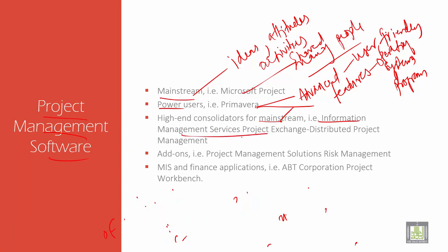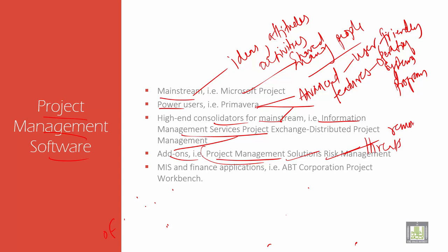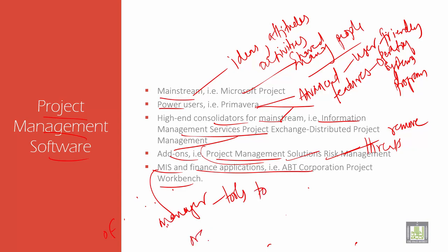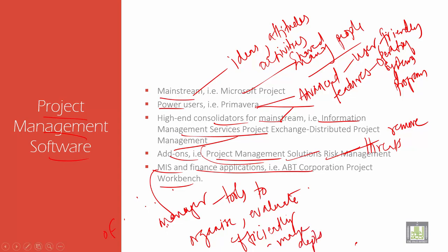Add-ons are tools which integrate into your browser — similar to regular apps or programs that run when the browser runs. They create solutions for risk management, removing threats. MIS, the Management Information System, is a computer-based system that provides managers with tools to organize, evaluate, and efficiently manage departments.